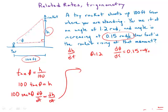Now I just have to plug in: dh/dt equals 100 times the secant squared of 1.2, the angle, times dθ/dt, which is 0.15.